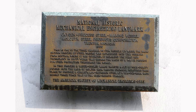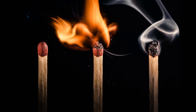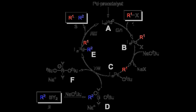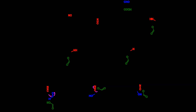Complex reactions, on the other hand, involve multiple steps and intermediate species. These reactions occur through a series of elementary reactions, where the products of one step become the reactants of the next. For example, the combustion of methane — CH4 + 2O2 → CO2 + 2H2O — is a complex reaction occurring through a series of elementary steps, where methane reacts with oxygen to form intermediate species such as CH3• and OH•, which then react with other oxygen molecules to form the final products. The rate of a complex reaction is determined by the slowest step, known as the rate-determining step.